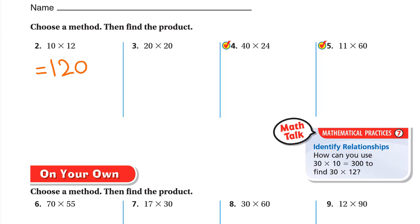Next, 30 × 20: we have two zeros in the factors, so we write both zeros in the product. Now the question is 3 × 2 = 6, so the answer is 400. Wait — 3 × 2 is 6, giving us 600. The answer is 600.